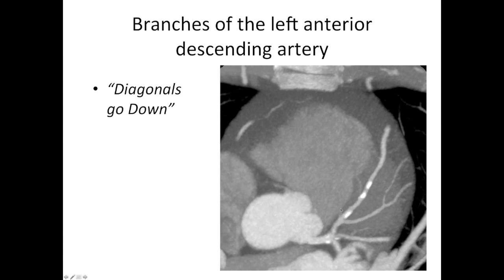These little ones here that are going upward are the septal branches. They're a bit smaller, a bit wiggly, and they're going into the intraventricular septum which is down in here. So these ones are the septal branches, and this is the diagonal branch.